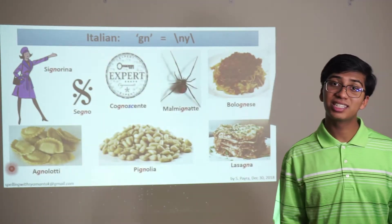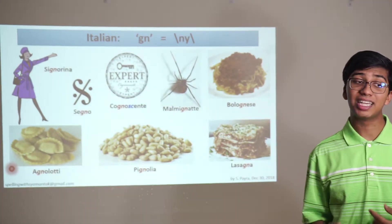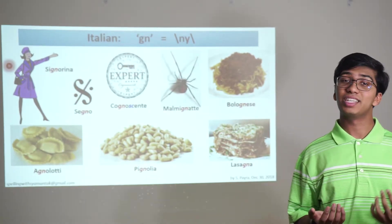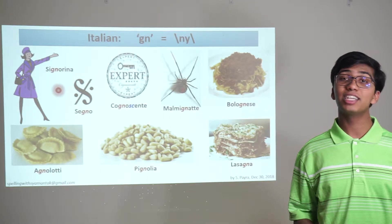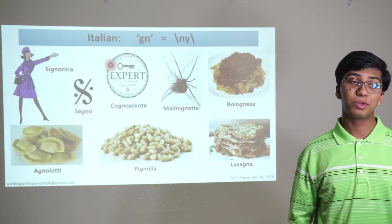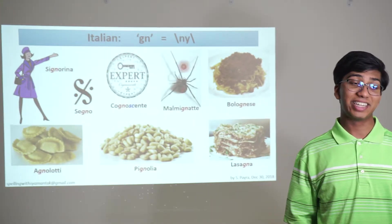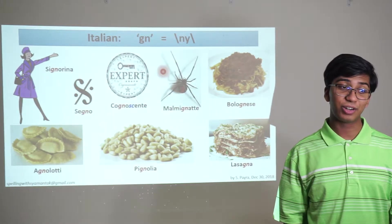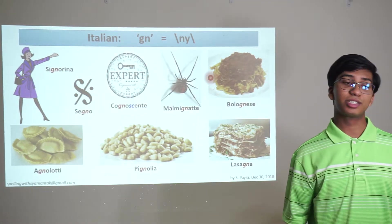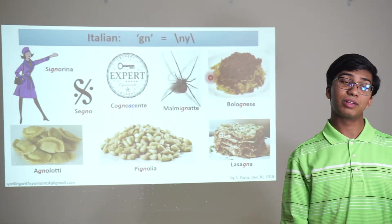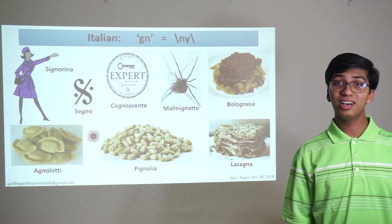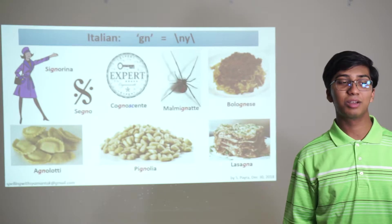When you have that ñ sound, it's almost always going to be a GN. So with the ñ sound you have signorina — an unmarried Italian woman — segno, a notation in music marking the beginning or end of a repeat, cognoscenti — someone who's an expert in something — malmignatta, a small black venomous spider of southern Europe with 13 small red spots on the abdomen. You have bolognese — usually used to describe a sauce prepared with tomato sauce that has meat in it. Agnolotti — a kind of pasta. Pignolia — pine nuts. And lasagna, which most of you have probably had.